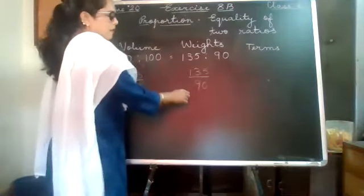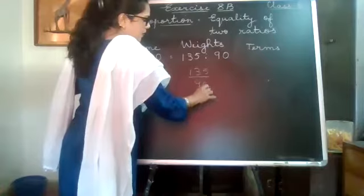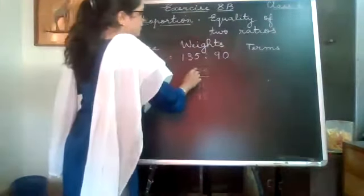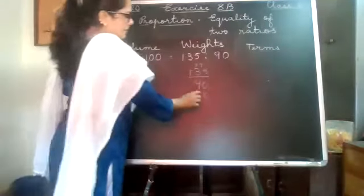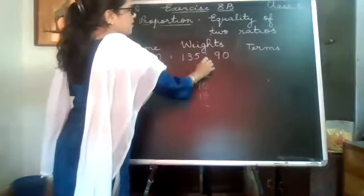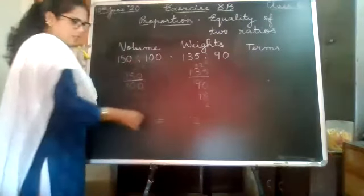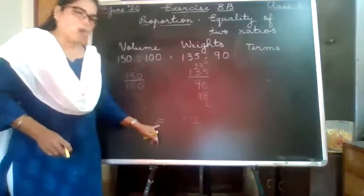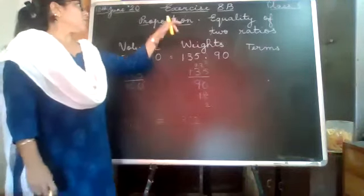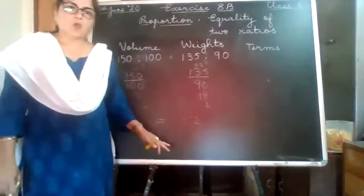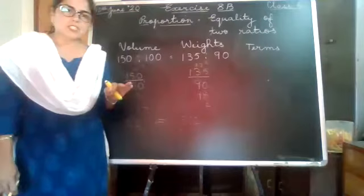Now let us do the same with the second ratio: 135 upon 90. Reduce both of them — both are divisible by 9. 9 divides 18 twice and 27 three times, giving us 3 upon 2, which is 3 is to 2. So we can see that this pair of ratios is in equality because we got identical ratios on both sides — so they are in proportion.